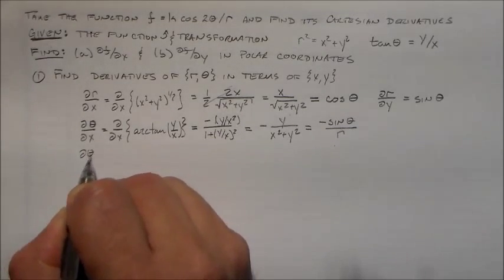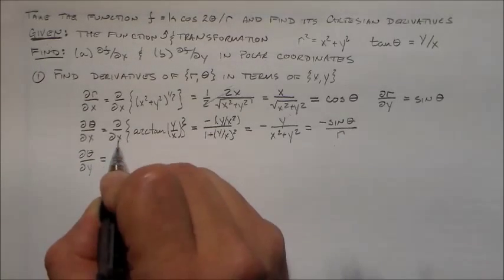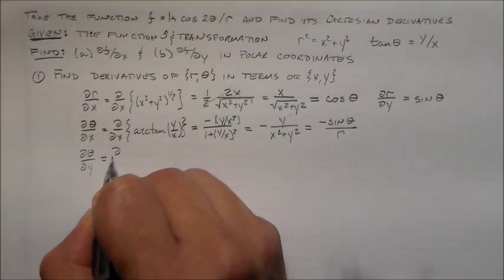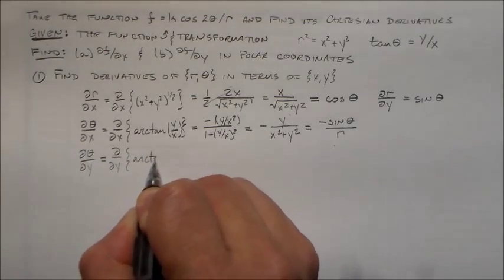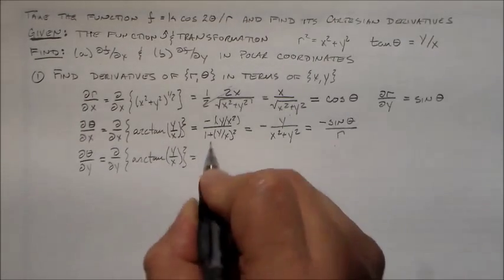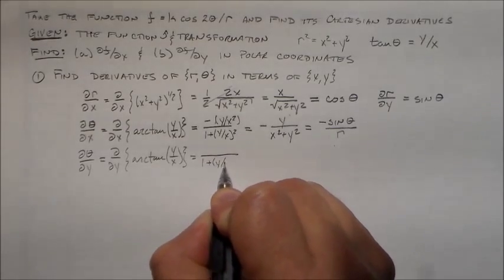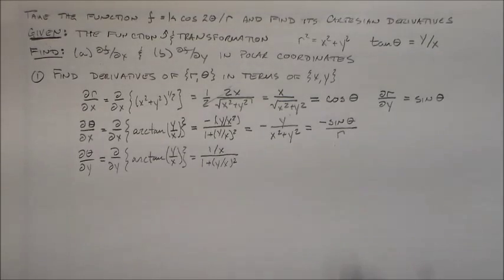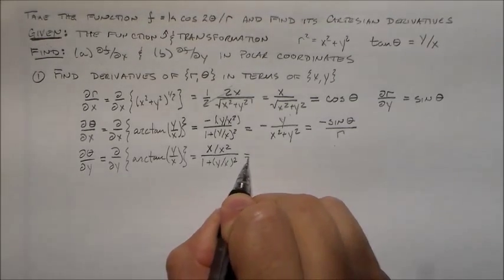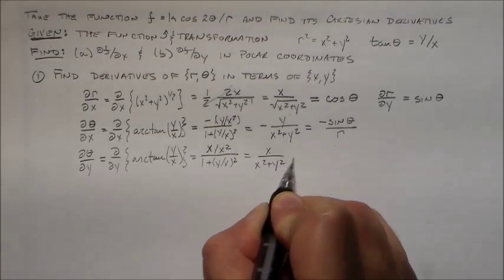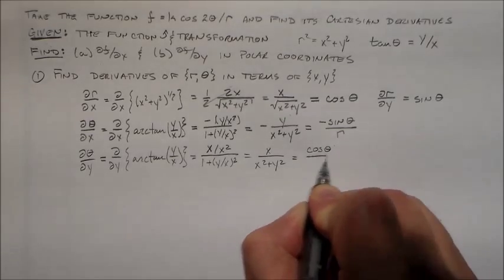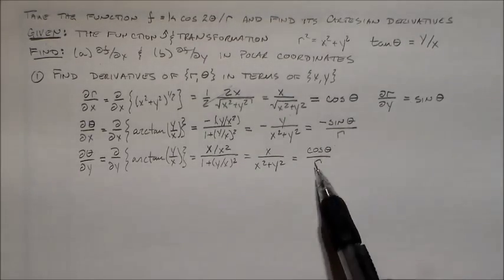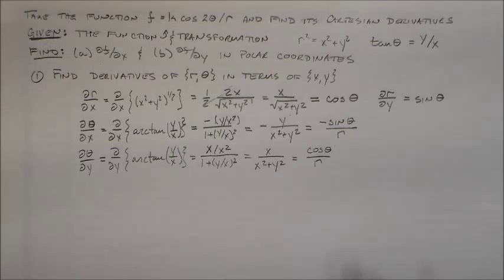What do you think ∂θ/∂y is going to be? The derivative of arctan(y/x) times the derivative of y/x with respect to y is 1/x, which I'll write as x/x². So I have x over (x² + y²), which equals cos θ/r. So these two (∂θ/∂x and ∂θ/∂y) have different signs.